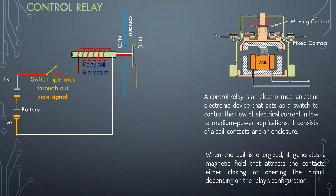In this animated picture, we shall watch how a relay operates to make NO and NC contacts when energized by an outside source.